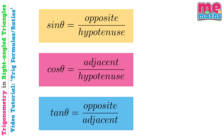These are the three trig identities or formulas, and I know they can look a little bit scary if you've never seen them before, but don't panic, we're going to take it very slowly. Firstly we have sin theta — remember that symbol from last time, theta represents an angle — sin theta equals opposite divided by hypotenuse, cos theta equals the adjacent divided by the hypotenuse, and tan theta is equal to the opposite side divided by the adjacent side.